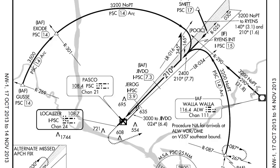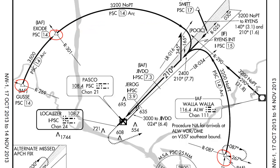A DME arc is simply just a way to do a course reversal that's not a procedure turn. In this case, we would intercept the arc at this initial approach fix of Exode, or possibly down here at Gussie, or maybe even over here. We would then fly the arc all the way around to the final approach course and proceed inbound. In some areas, it's not even possible to find a fix where you can fly a normal procedure turn — the only way to get to the final approach course is by an arc.